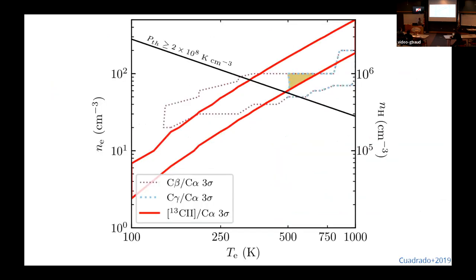So why are these a great complement? Well, basically because C+, particularly 13C+, the temperature dependence is different from the recombination line. So when you look at these two lines together and if you have more lines,